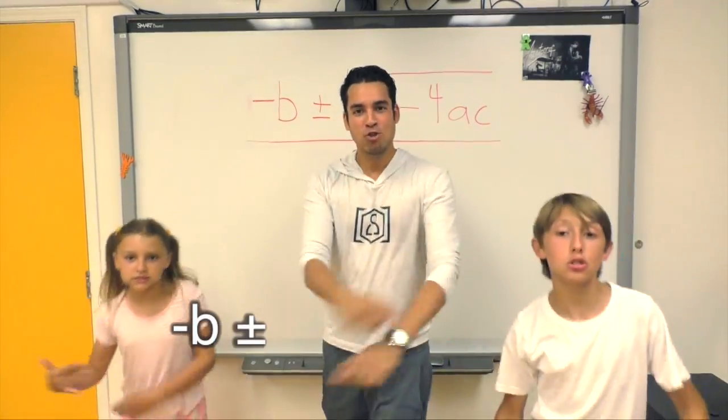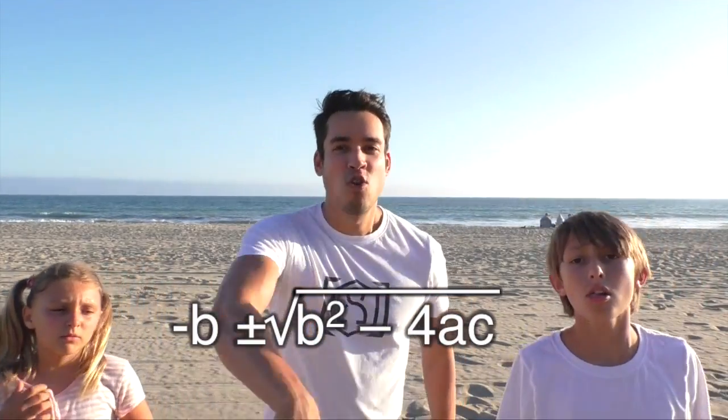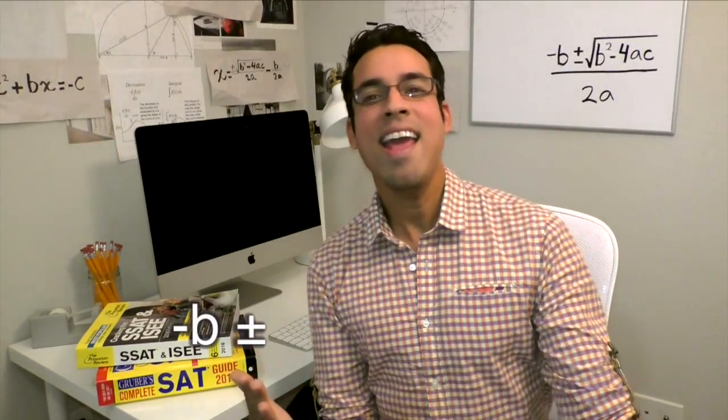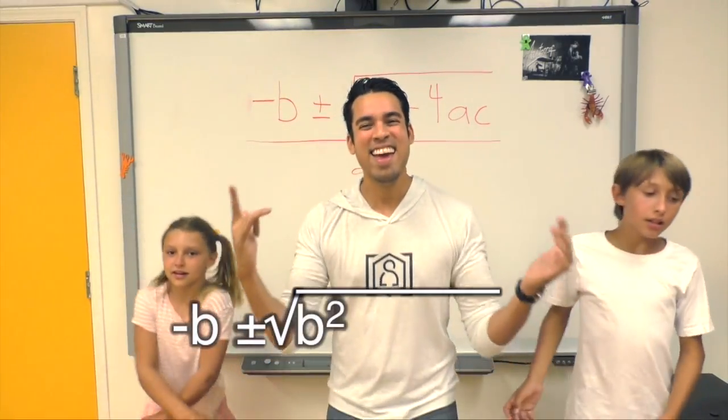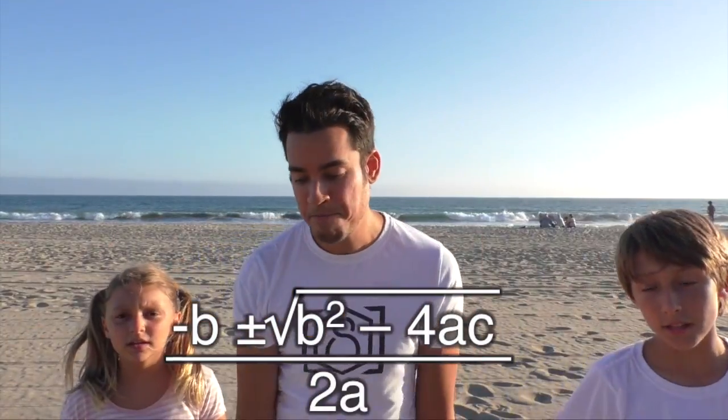Negative b plus or minus the square root of b squared minus 4ac all over 2a. Negative b plus or minus the square root of b squared minus 4ac all over 2a.